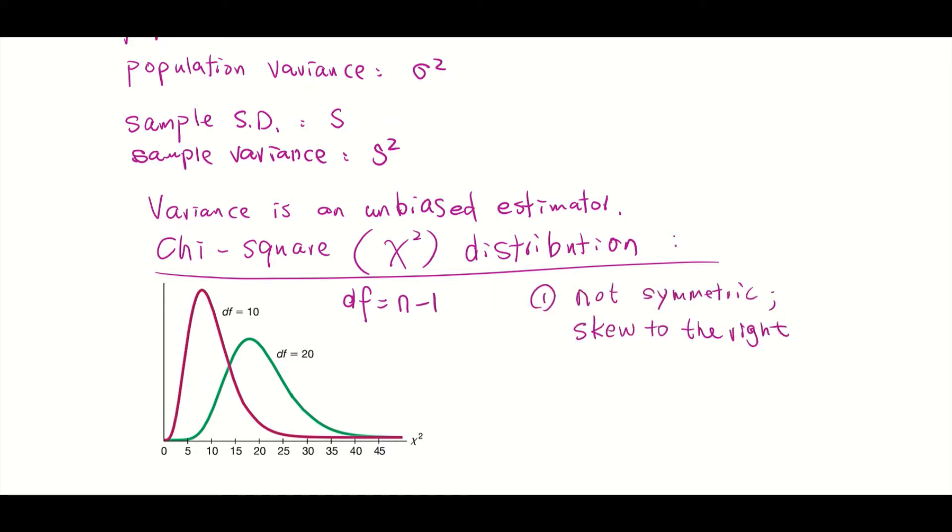We can tell for each chi-square distribution, the curve is not symmetric, but skewed to the right. And with different degree of freedom or different sample size, the curve looks different.